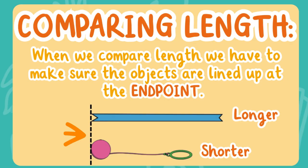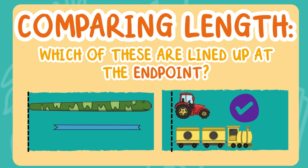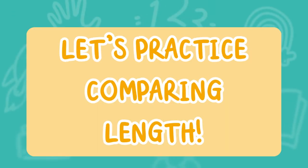Let's practice with some more objects. We have two pictures down below. Out of these two pictures, which of the objects are lined up at the end point correctly? That's right! The tractor and the train are both lined up at the end point. The stuffed snake and the ribbon are not lined up at the end point. Let's practice comparing length.